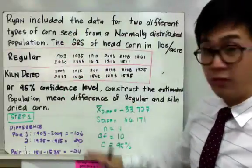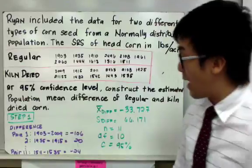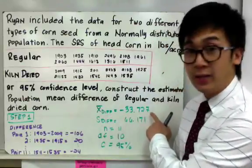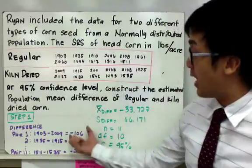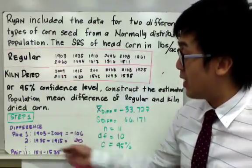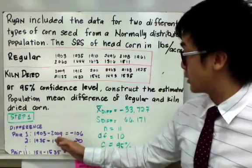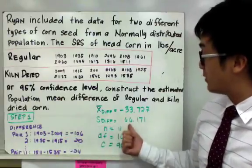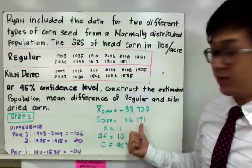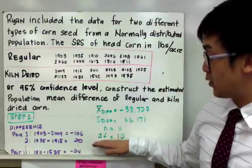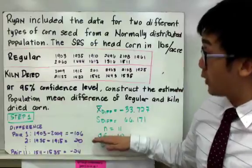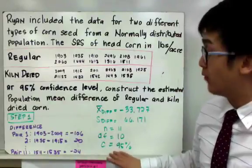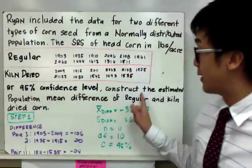That's why on our variable here, we have the mean difference of negative 33.727 which we found by listing all the differences of sample one and sample two. And for the standard deviation differences, we have 66.171 with a sample size of 11 and degrees of freedom of 10. Again, we're going to use our critical value from 95% confidence level because it's also given in the problem.